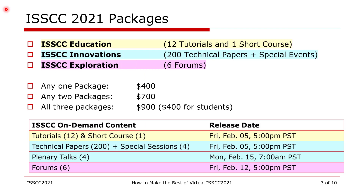Here is a quick summary of what was covered on the previous slide, plus some information on the registration fee for each package and the release dates of the on-demand content. The registration fee is $400 for any one package, $700 for any two packages, and $900 for all three packages, that is, for all content.